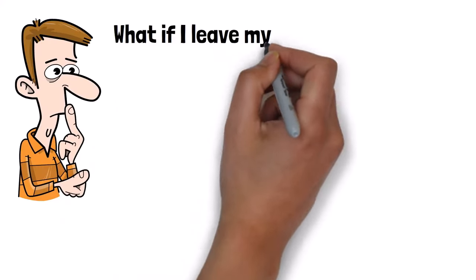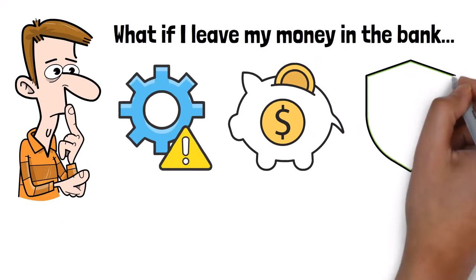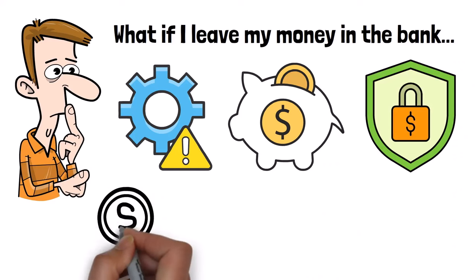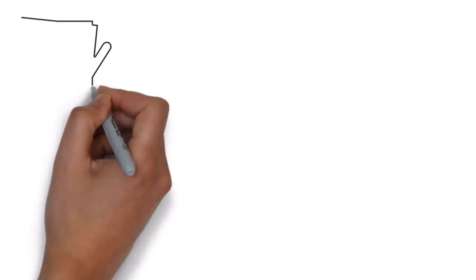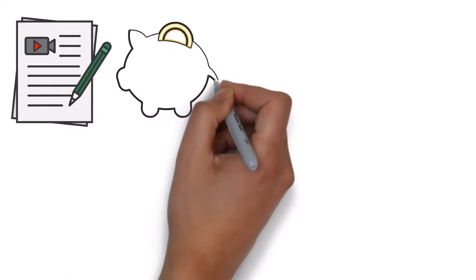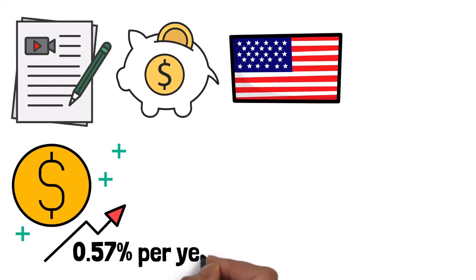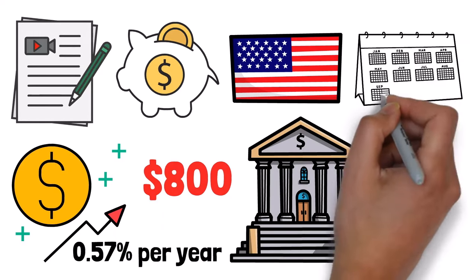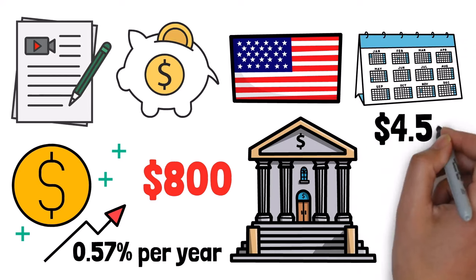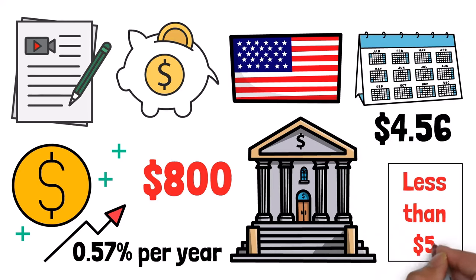Now, you might be thinking, what if I leave my money in the bank? After all, it's less risky, right? Even though bank saving accounts are one of the safest ways to guarantee that you will not lose even a single cent, this also means that they offer the lowest reward. Right now, as of the time of making this video, the average savings account in America is yielding an interest rate of 0.57% per year. That means putting $800 in the bank today, one year from now, you will have made an extra $4.56. That's right, less than $5.